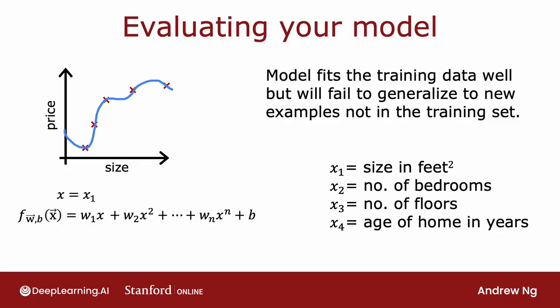Let's take the example of learning to predict housing prices as a function of the size. Let's say you've trained a model to predict housing prices as a function of the size x and fit a model that is a fourth-order polynomial, so it features x, x-squared, x-cubed, and x-to-the-fourth. Because we fit a fourth-order polynomial to a training set with five data points, this fits the training data really well. But we don't like this model very much because even though the model fits the training data well, we think it will fail to generalize to new examples that aren't in the training set.